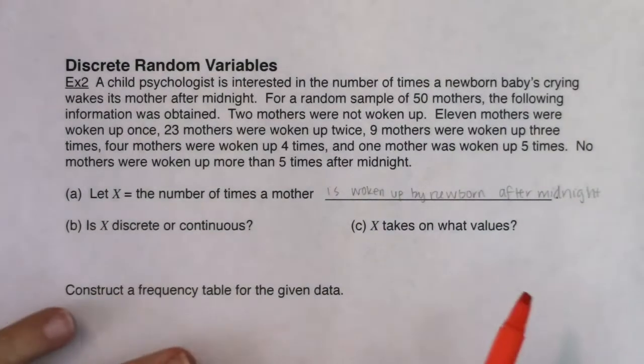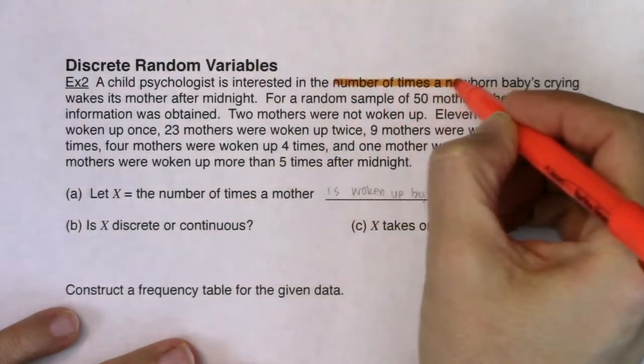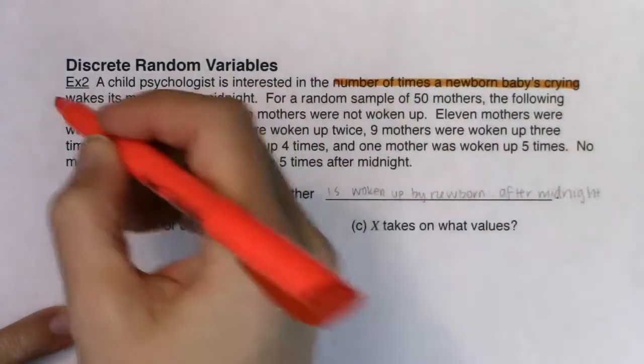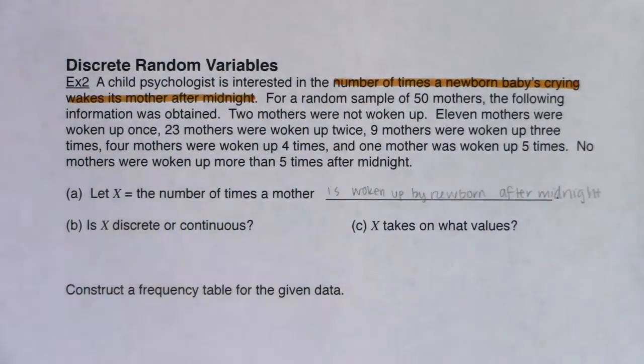Maybe you heard it right here. It says the number of times a newborn baby's crying wakes its mother after midnight. As we progress through chapter four, you're going to see that phrasing a lot - the number of something. That's a real giveaway in terms of what your variable is.